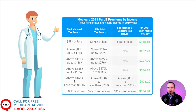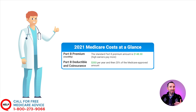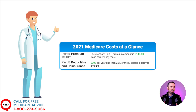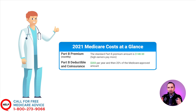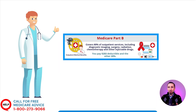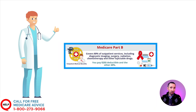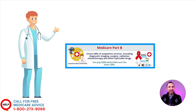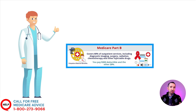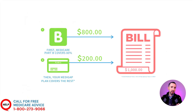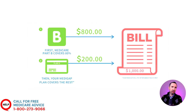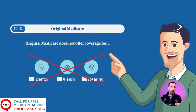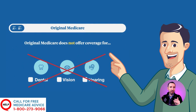In addition to the monthly premium, there's a deductible that starts at $203 per year, and it could be higher depending on your income. After you pay your yearly deductible, Medicare will pay 80% of covered medical costs, and you pay the other 20%, which can get expensive. We'll talk about gap coverage shortly. It's also worth noting that Medicare Part A and Part B don't cover many costs like dental, vision, and hearing services.